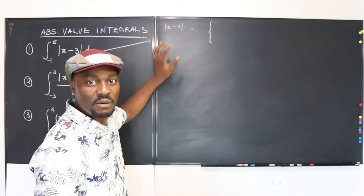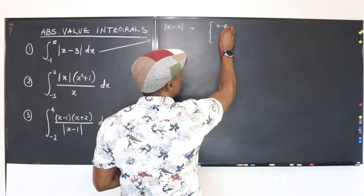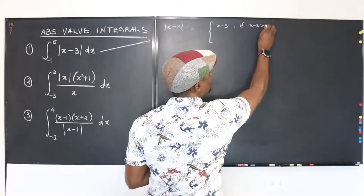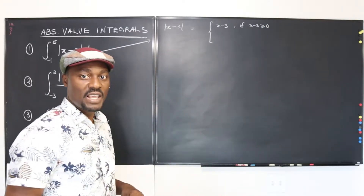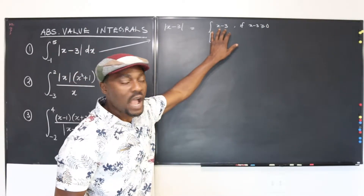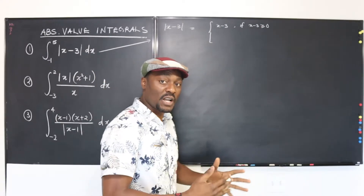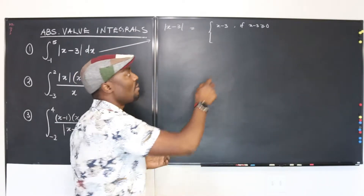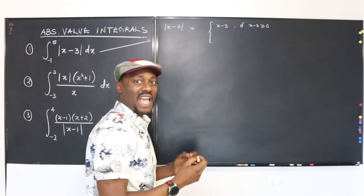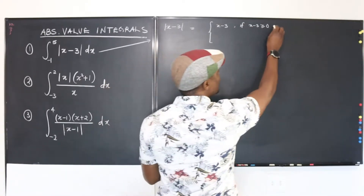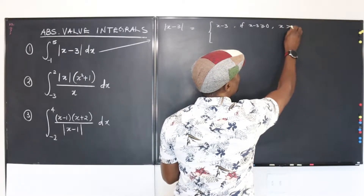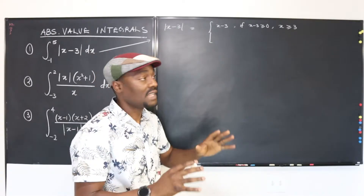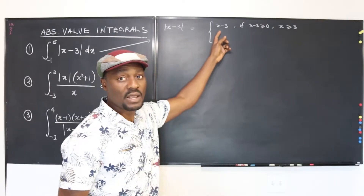It's either we assume the argument is positive — so we say this equals x minus 3, and that's only true if x minus 3 is greater than or equal to zero. We can see that it simply means x is greater than or equal to 3. That's when you're going to use this expression — whenever x is greater than or equal to 3.